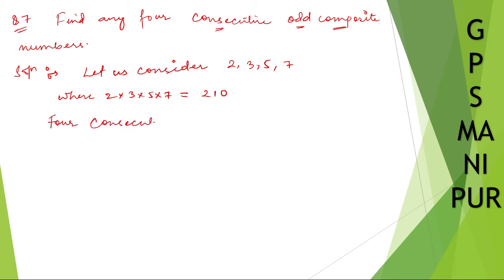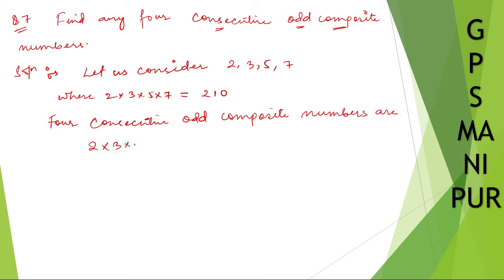So the four consecutive odd composite numbers — the first number is two into three into five into seven plus three, which is two hundred ten plus three, giving two hundred thirteen. We skip two and four because those give even numbers, and we need odd numbers.